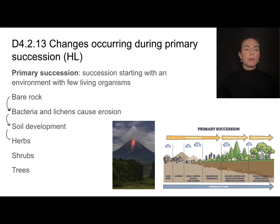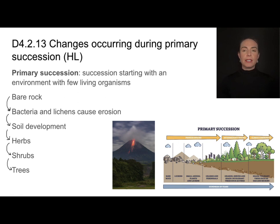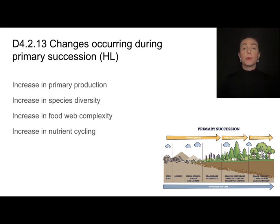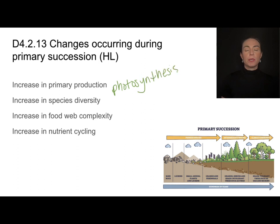Once you have soil, you can start to grow plants. Herbs are really the first type of plants that grow, then you see the development of shrubs, and finally the development of trees. This entire sequence is what we call primary succession. During that process, we note some key changes — one being an increase in primary production, mainly through photosynthesis. Once we start having herbs and shrubs, we see a lot more photosynthesis taking place, and that continues as we progress towards trees.